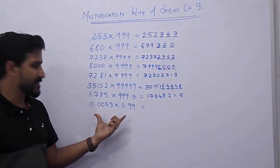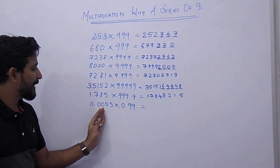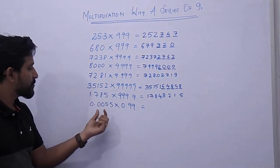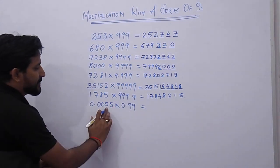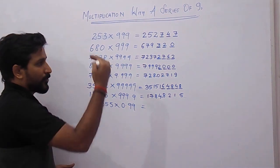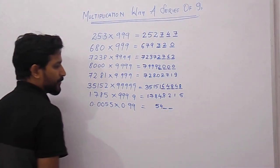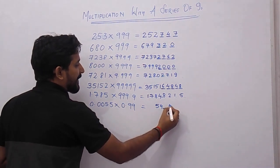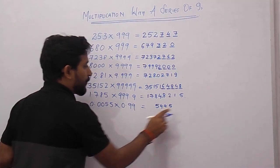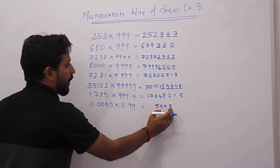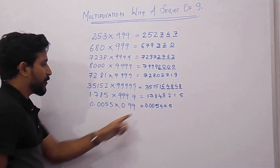The last example: 0.0055 × 0.99. Whenever you see leading zeros before a number between 1 and 9, neglect all those zeros. So this becomes 55 × 99 — a 2-digit number with two 9's. Decrease 55 by 1 to get 54, then take the 9's complement of each digit: 9 minus 4 is 5, 9 minus 5 is 4. The result digits are 5445. Now count the decimal places — there are 6 total, so place the decimal to get 0.005445.